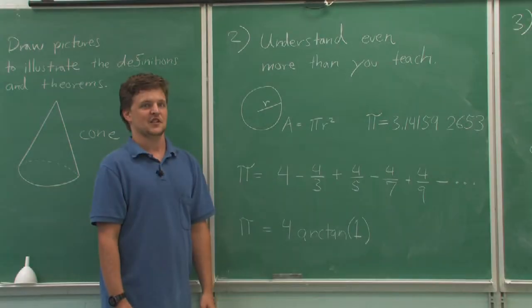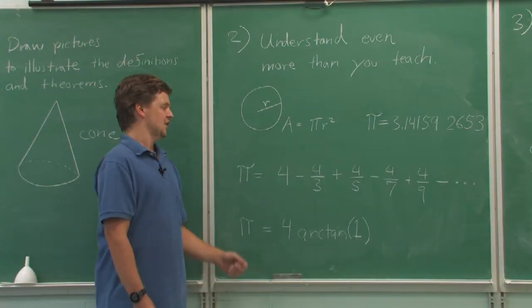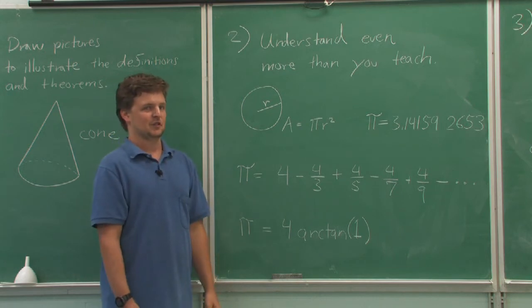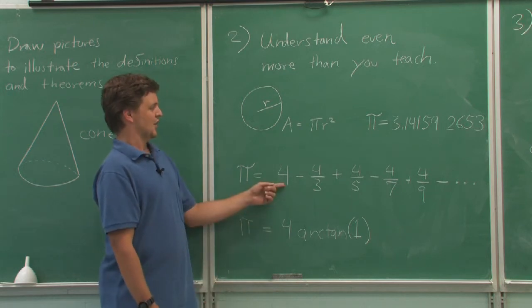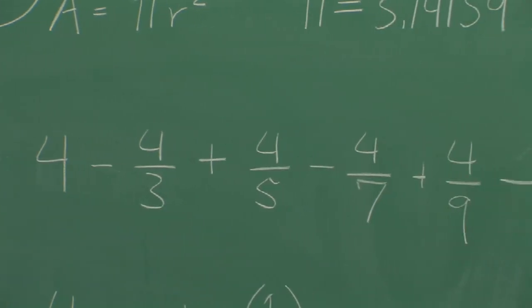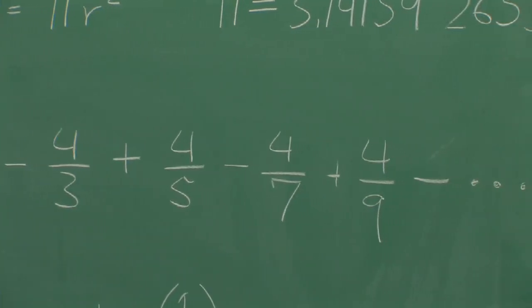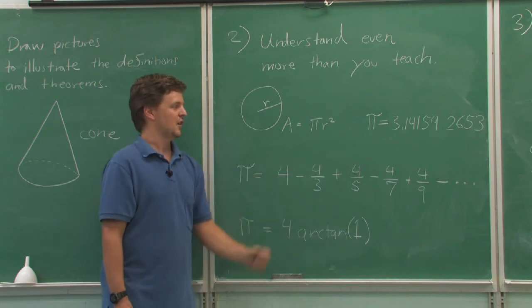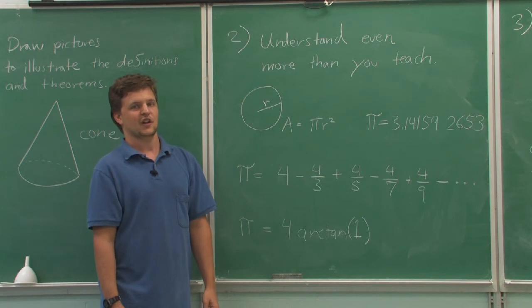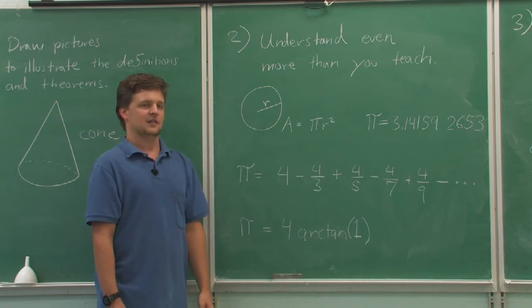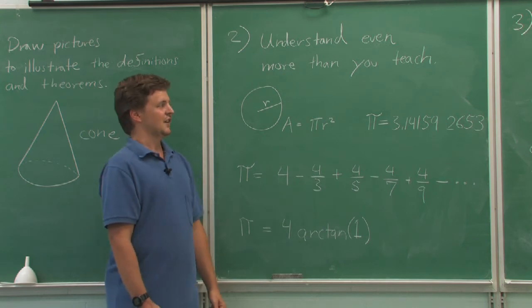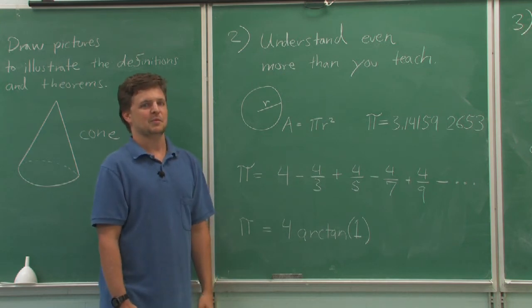How do we get those digits? Well, one way is this expansion invented by Leibniz and Gregory. Start with four, subtract four thirds, add four fifths, subtract four sevenths, add four ninths, and continue. The top number is always four, the bottom number is going to be the next odd number, and the subtraction and addition alternates. That gives you pi.